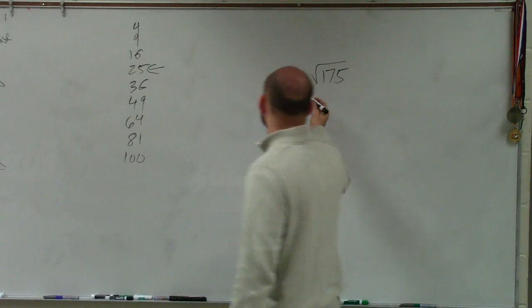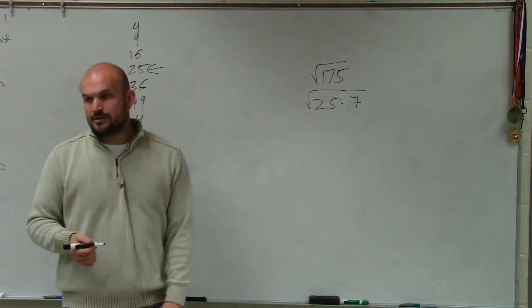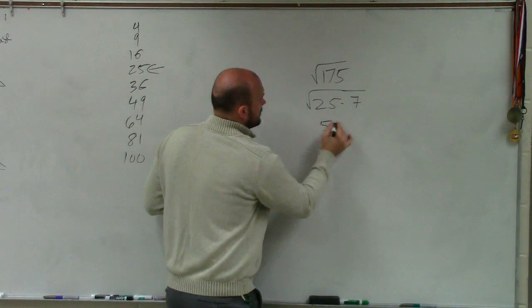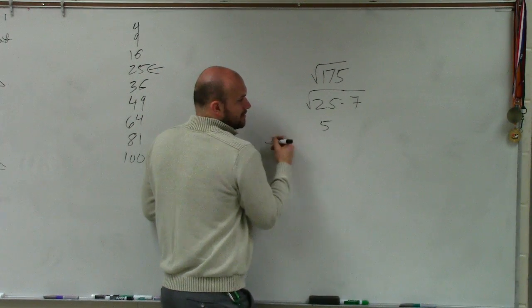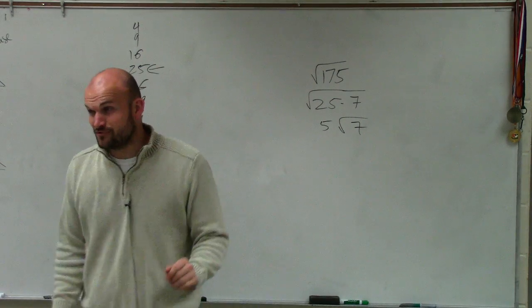And exactly, we can rewrite this as 25 times 7. Do we know the square root of 25? 5. Do we know the square root of 7? No, because it is an irrational number, which is approximately 2.6457513.